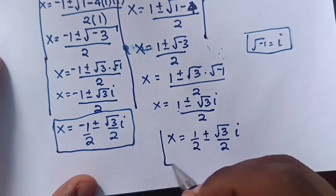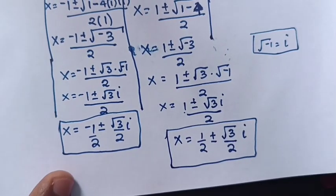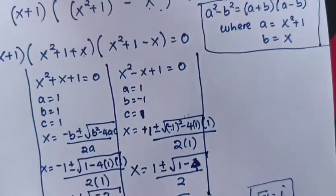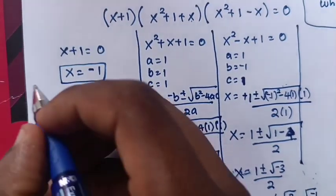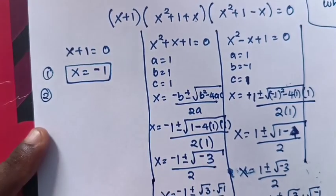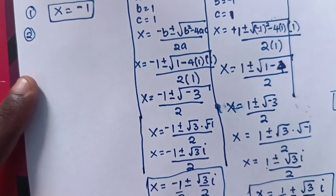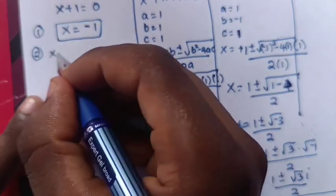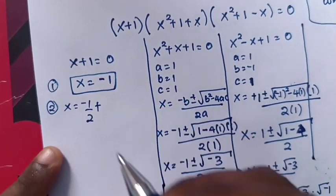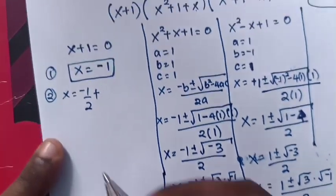So from here, the 5 values of x are: x₁ = −1; x₂ = −1/2 + (√3/2)i; x₃ = −1/2 − (√3/2)i; x₄ = 1/2 + (√3/2)i; x₅ = 1/2 − (√3/2)i.